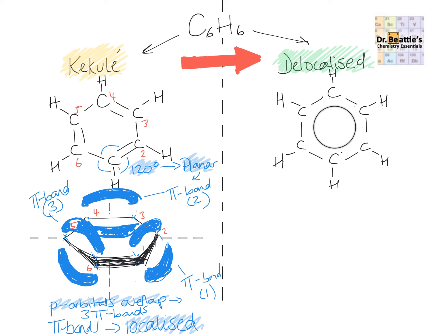Instead of constantly drawing this shuttling, we show this in a delocalized structure. We draw these three double bonds spread across the six carbons, giving us a circular ring within the ring system. Just like the Kekulé model, these carbon atoms are in a trigonal planar geometry, so they have a bond angle of 120 degrees, and the whole ring system is also planar.